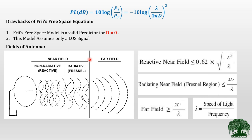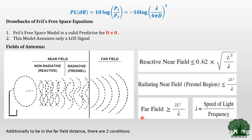Similarly, the next boundary is calculated by the formula 2L²/lambda. Any region between the reactive region boundary and this boundary is called the Fresnel region. Any region beyond 2L²/lambda is called the far field region. However, to qualify as far field, it is not enough to satisfy this formula alone — two more constraints must be satisfied: the Fraunhofer distance DF must be much larger than the physical dimension L, and DF must be much greater than the wavelength lambda. Satisfying these two conditions along with the formula defines the far field region. The free space path loss model is valid only if the receiver lies in this far field region.